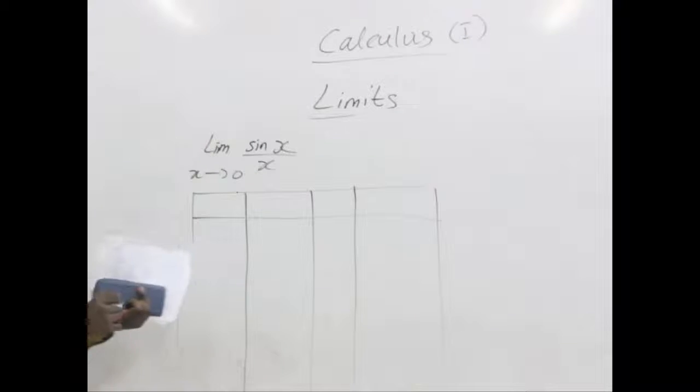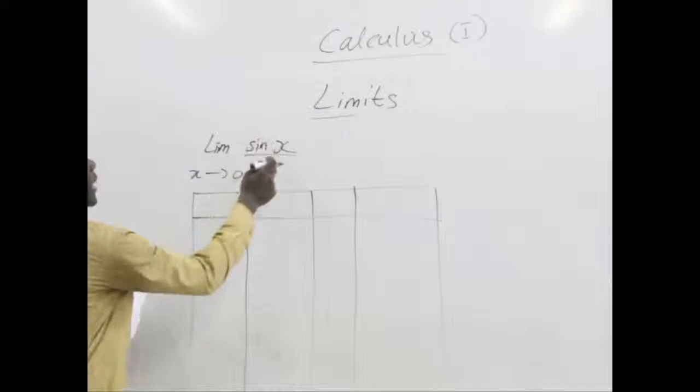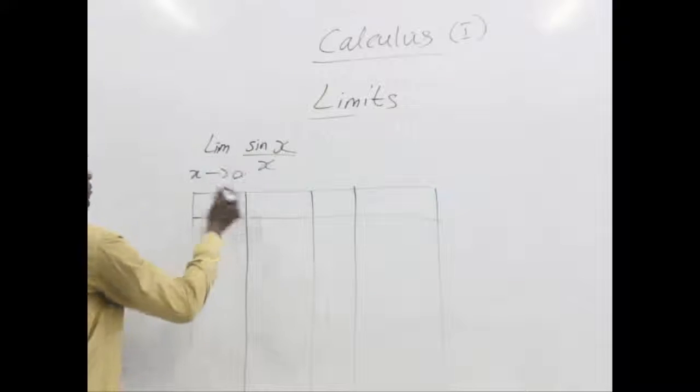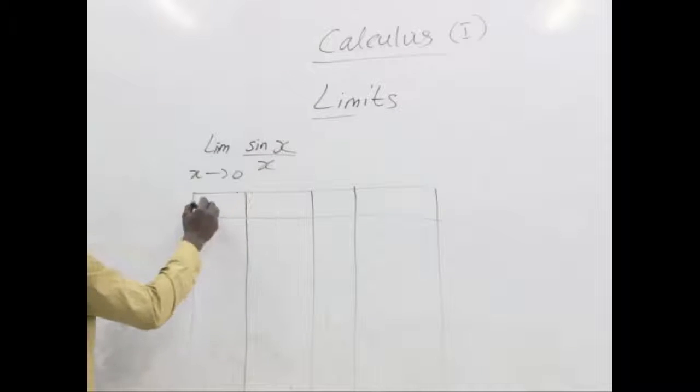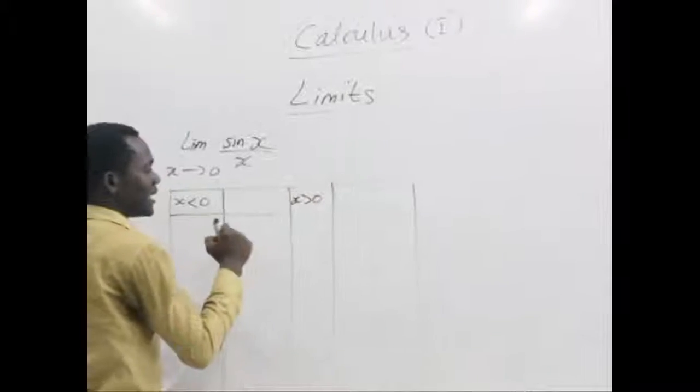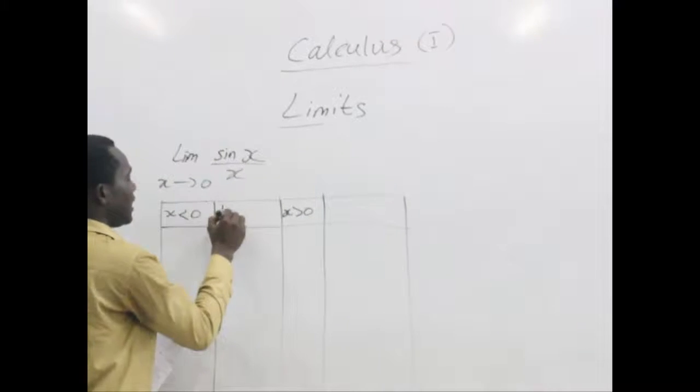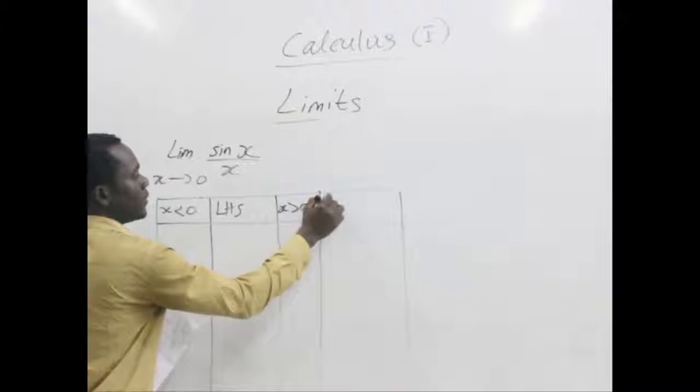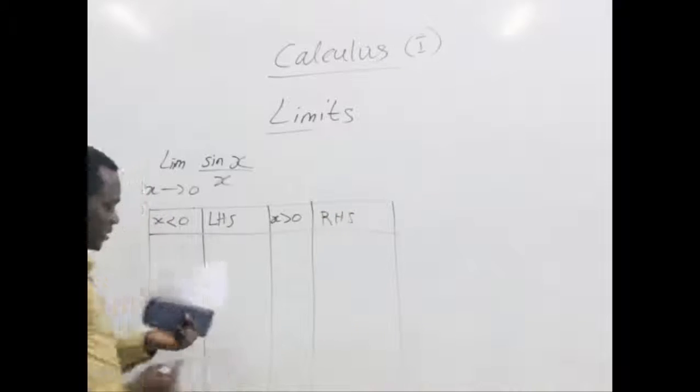Let's find the values and try to compare where they all get closer to. Taking sine x over x, values of x that are less than 0, that's from the left, and values of x that are greater than 0, that's from the right. The left hand side and the right hand side limit.